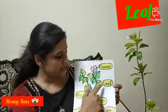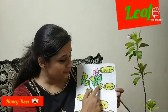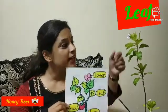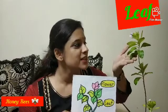Next is leaf, which is in green colour. Can you see the leaves here? Green colour leaves. So these are also parts of the plant.